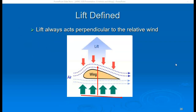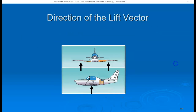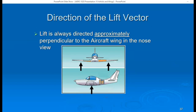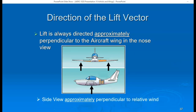A lift vector shows the direction and magnitude of the force on the airfoil. Lift always acts perpendicular to the relative wind and is also approximately perpendicular to the aircraft wing. That's the end of presentation number 10 on airfoils and wings.